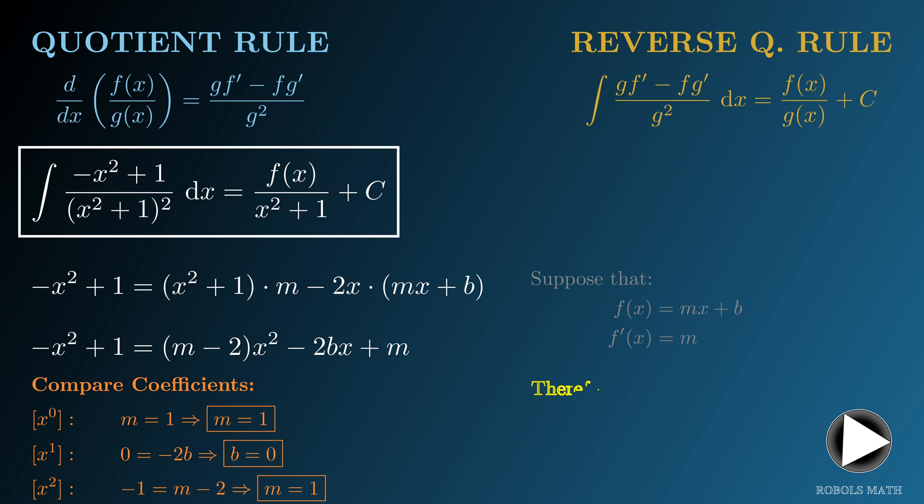Thus, f is simply x, and therefore, the antiderivative we are looking for is x over x squared plus 1, as expected.